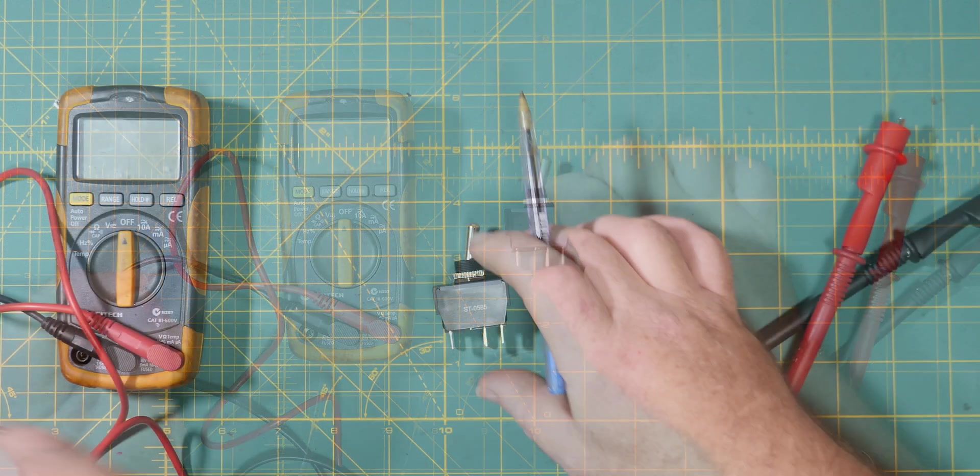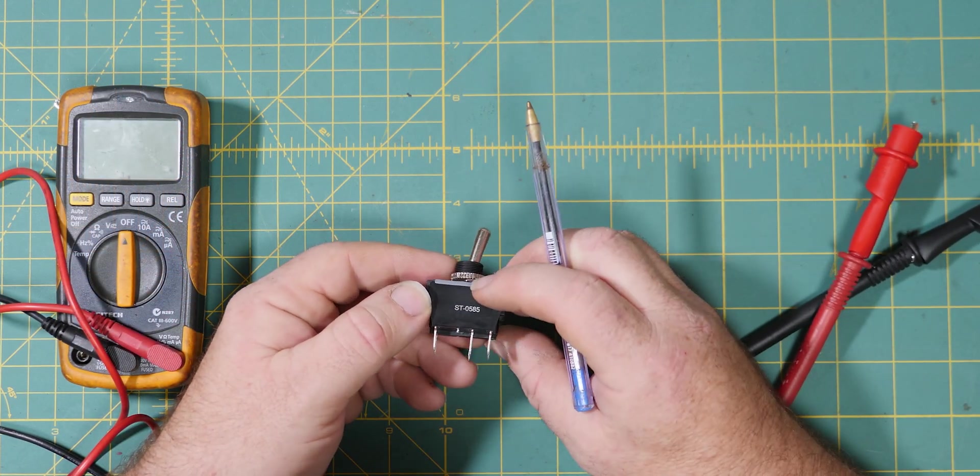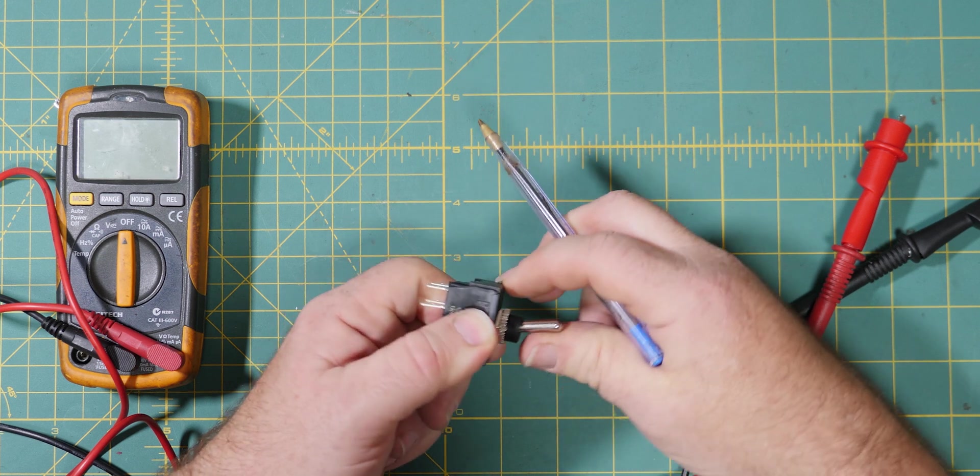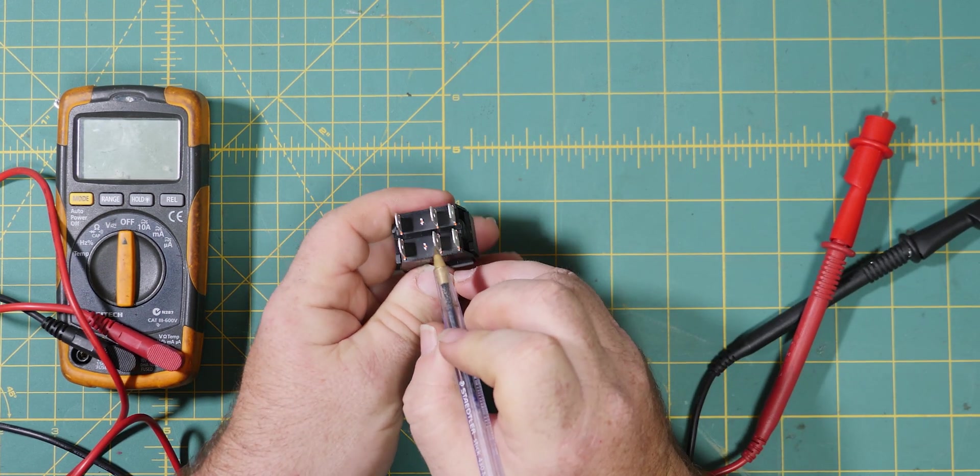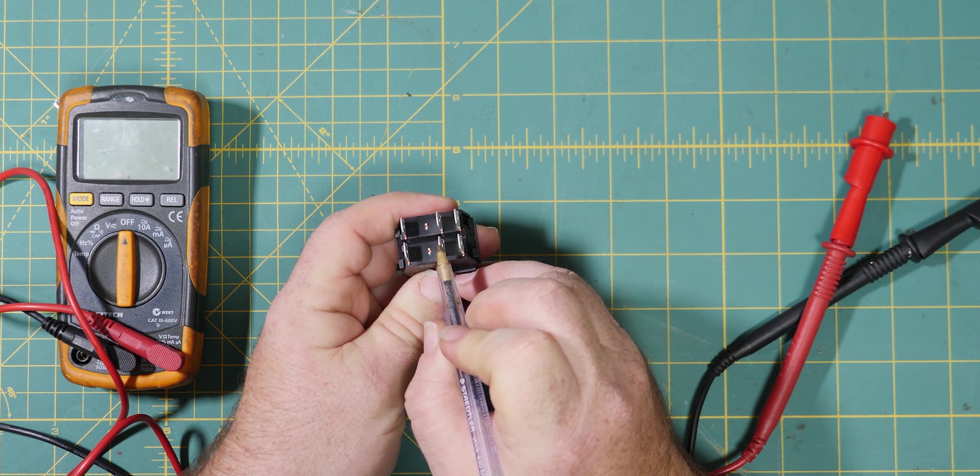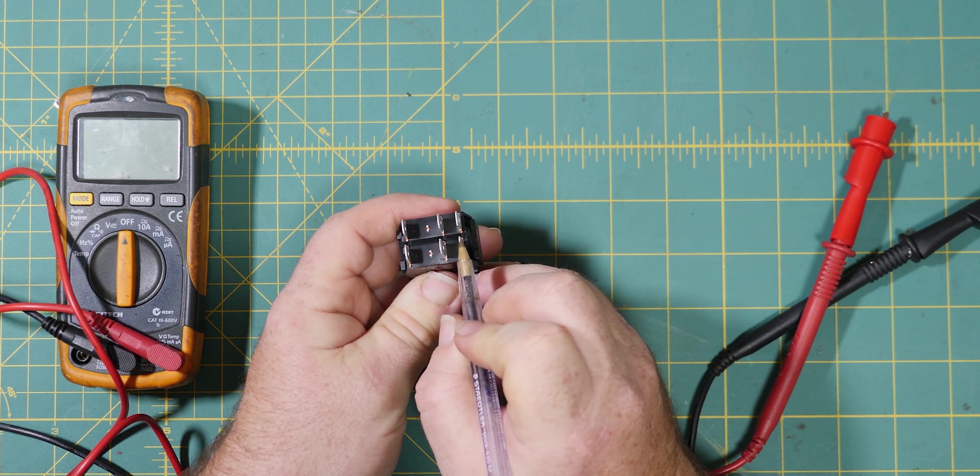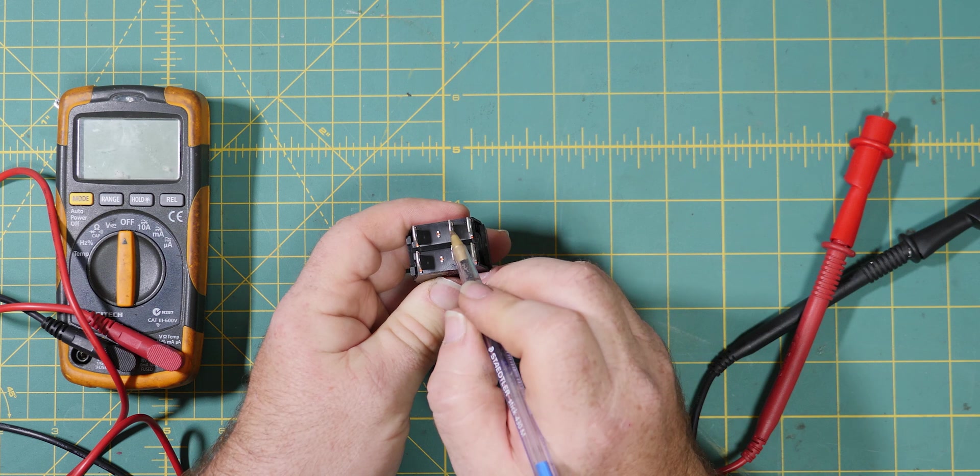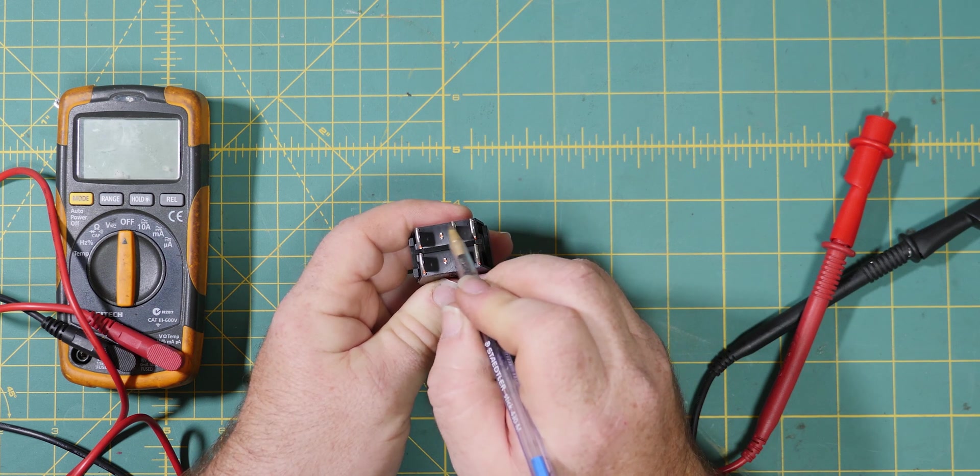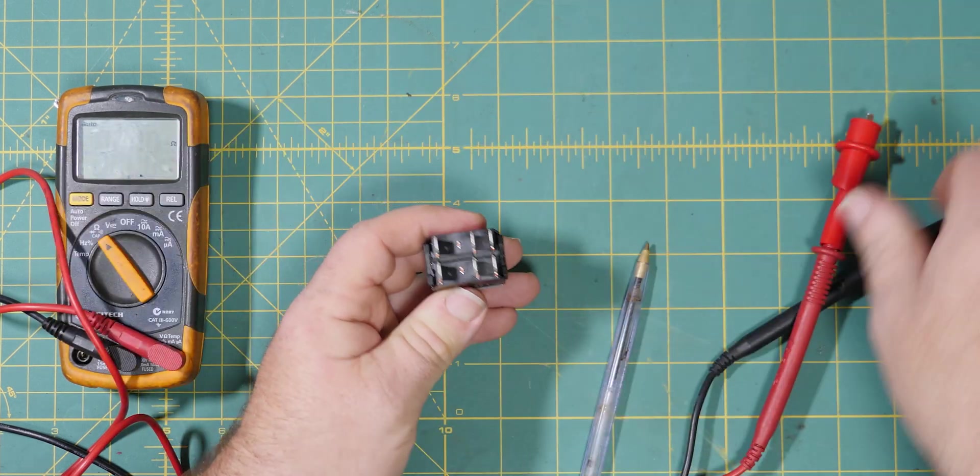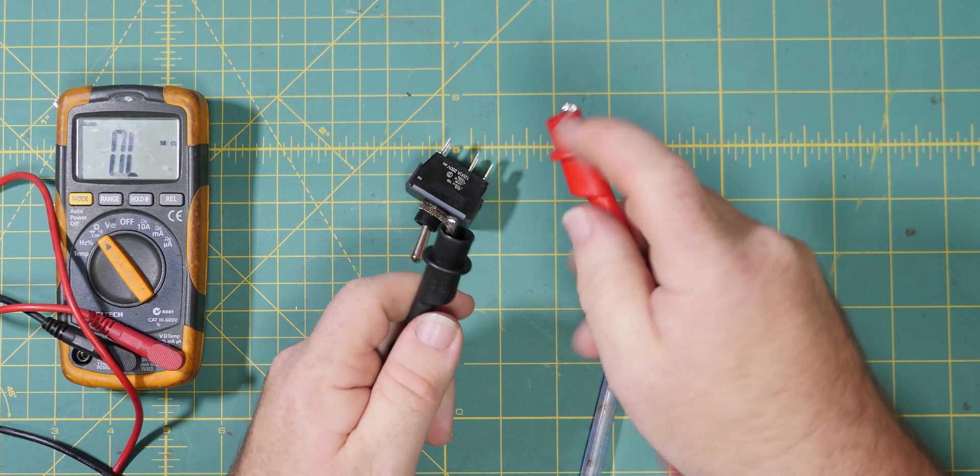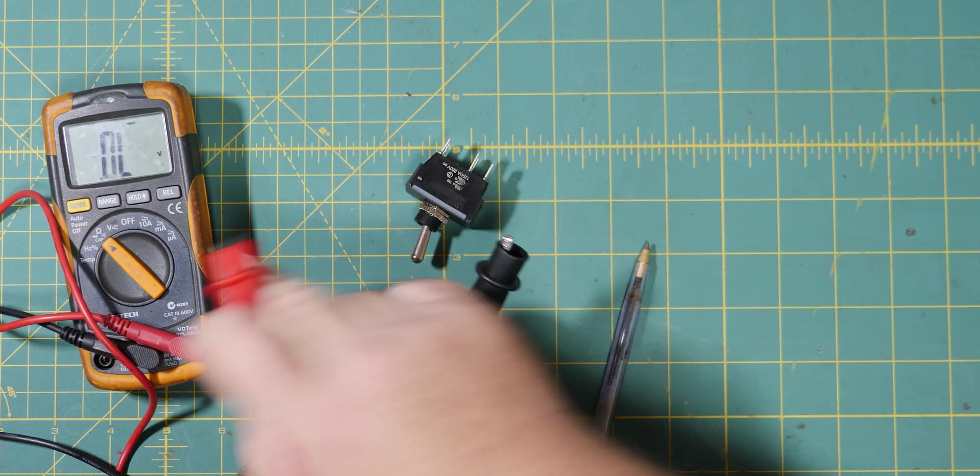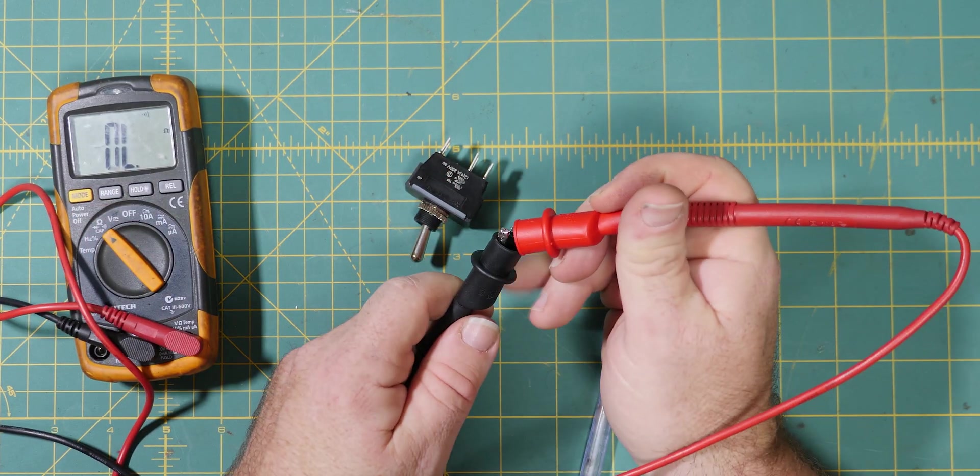First, the switch. This is a double pole double throw switch, which might sound like gobbledygook, but it simply means two gang switches operated by one toggle. Our connection is either from the common or input to either here or here. I've got our multimeter set on continuity, so when these two probes touch together we get a buzz.